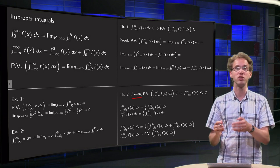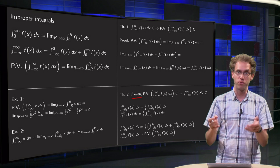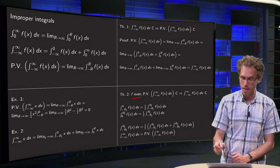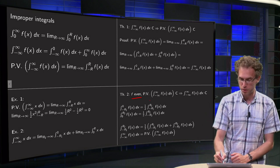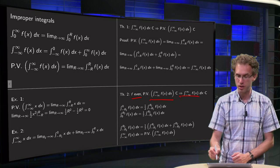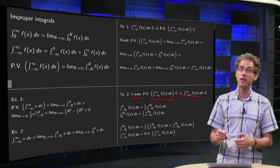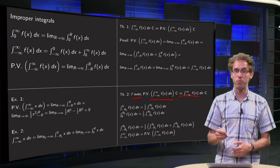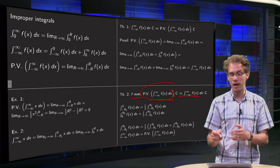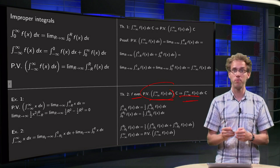If you have an even function — so f(x) equals f(minus x) — for example cosine of x or x squared, then if the principal value converges, so does the improper integral. This is really nice, because the results of our computations will always be those principal values, and we would like to have information about the original integral.